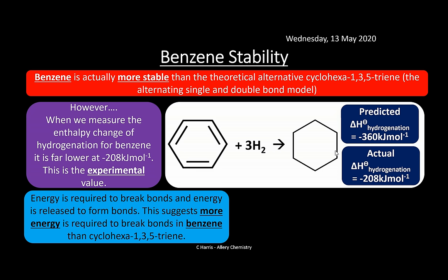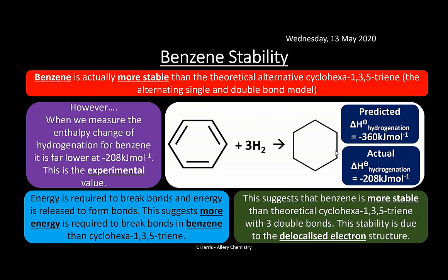Bond breaking is endothermic and bond forming releases heat energy. Benzene's hydrogenation is less exothermic than predicted, meaning benzene is more stable than the theoretical cyclohex-1,3,5-triene with three separate double bonds. This stability is primarily due to the delocalized electron structure — benzene adopted this arrangement to increase its stability.